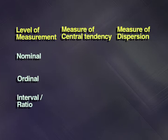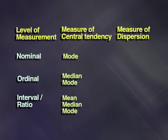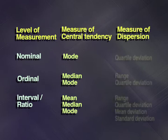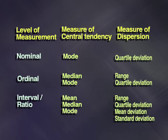Nominal means a level which is simply classified. Ordinal means values are arranged from increasing to decreasing or vice versa. Interval and ratio are values which can be measured and quantified. From the table, for a nominal level of measurement, mode is the ideal measure of central tendency, while quartile deviation is the ideal measure of dispersion. For ordinal data, median and mode should be used, and for dispersion, range and quartile deviation should be used. For interval and ratio, all measures of central tendency and all measures of dispersion can be used according to the requirement of the problem.